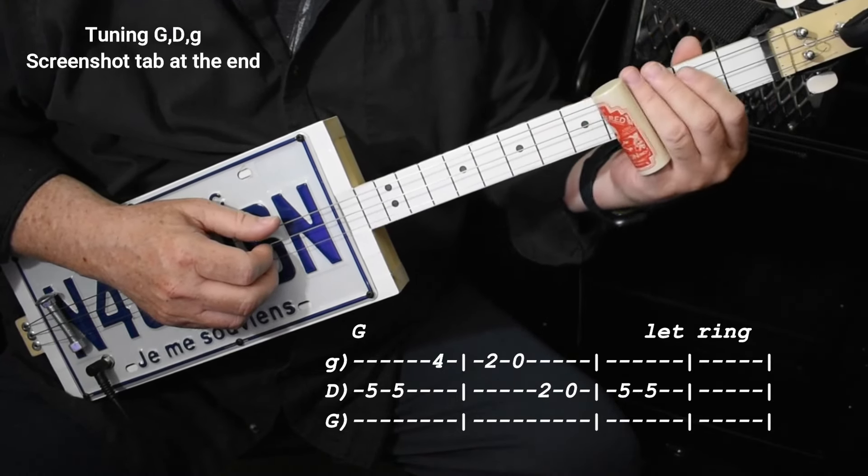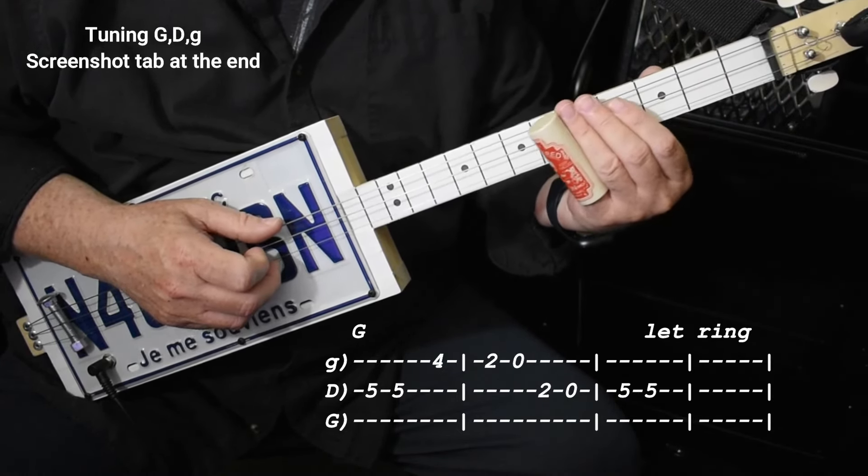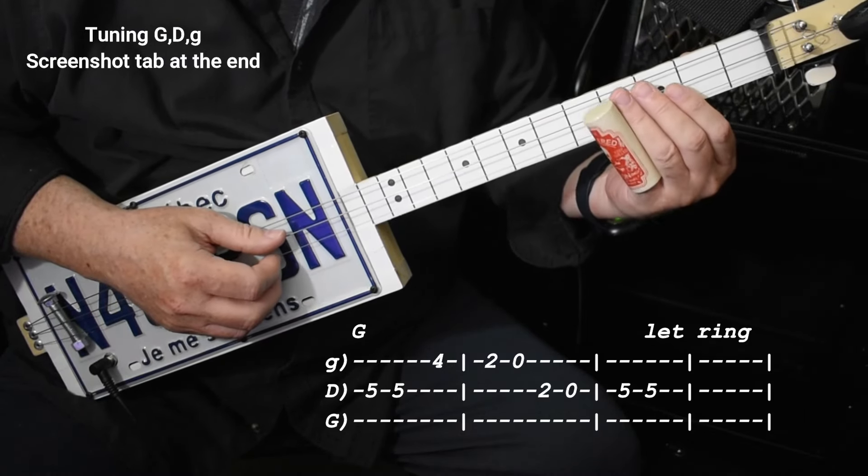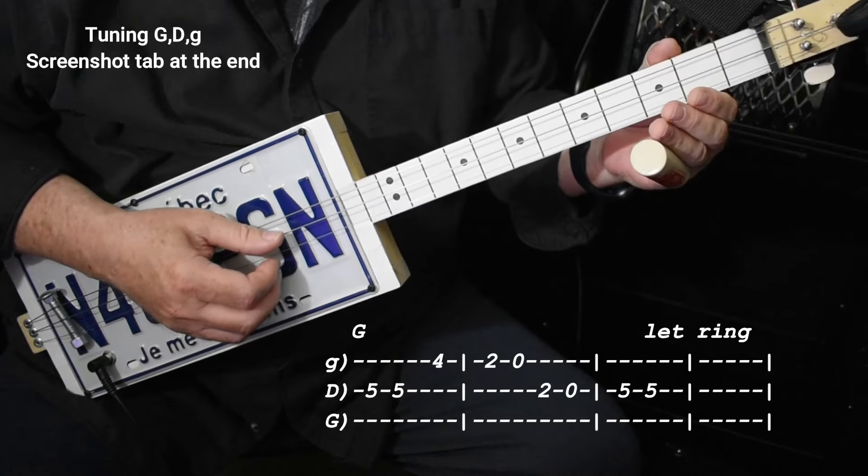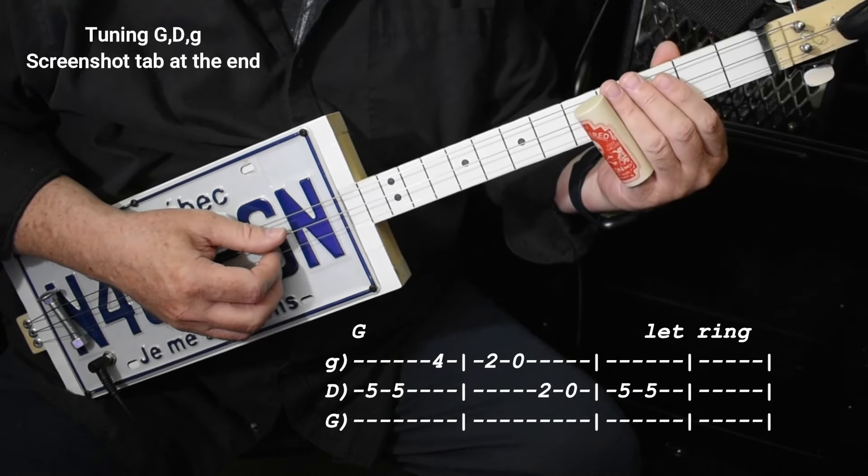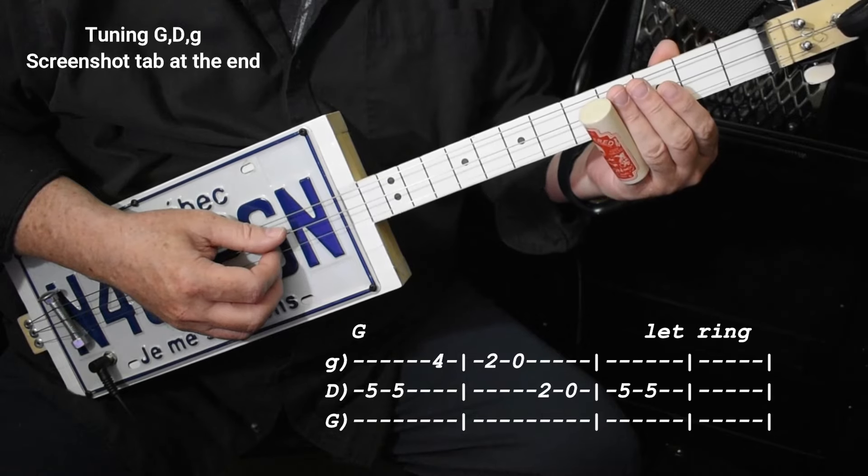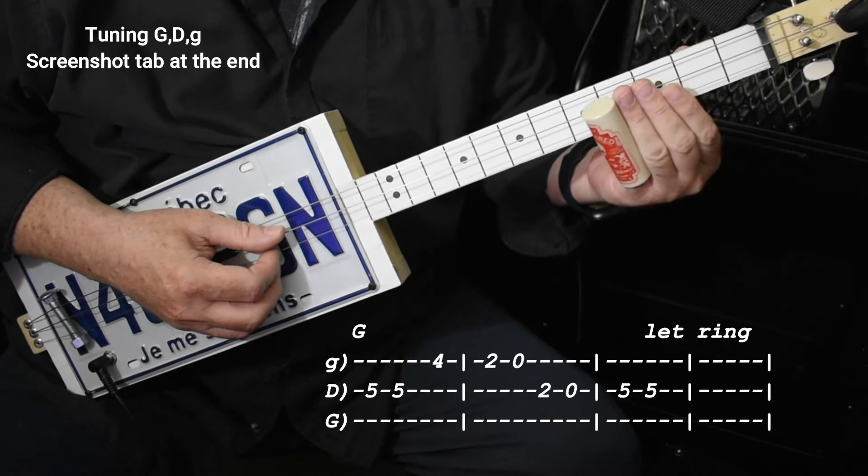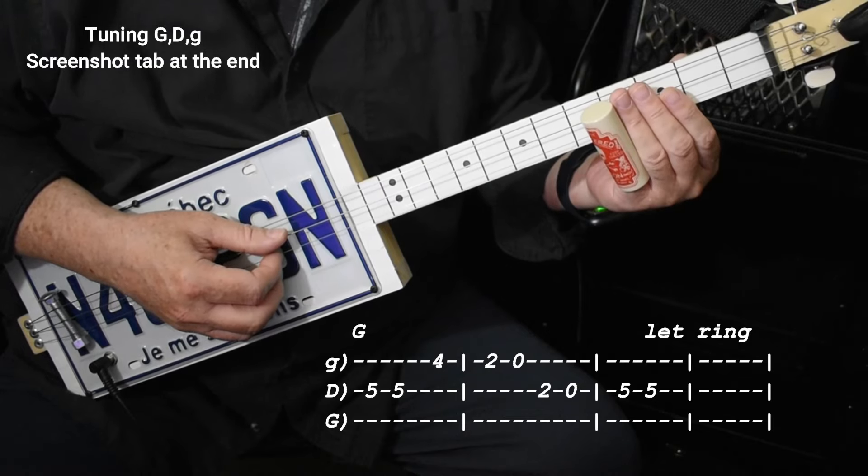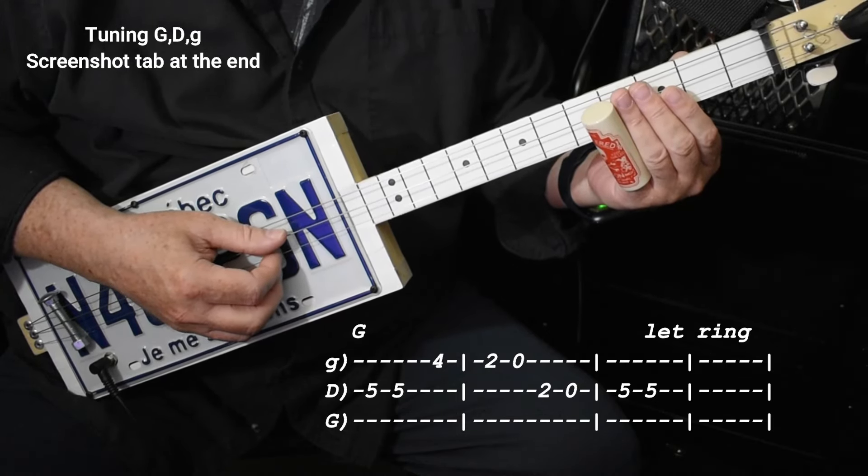Anyway, here's the first line: 5-5, then 4 on the high string. And I usually keep my strings muted with my right hand - they're kind of lying on them if I don't need them. And I often tip my slide slightly up, so I'm just getting the top string so I don't make any mistakes, or it sounds a little cleaner.